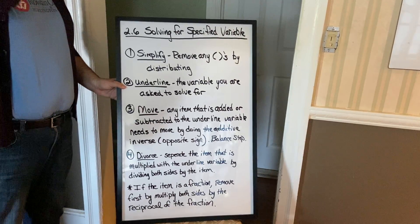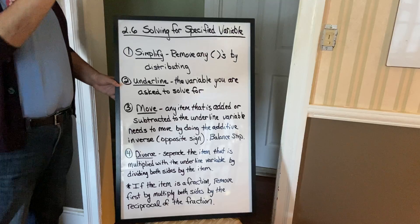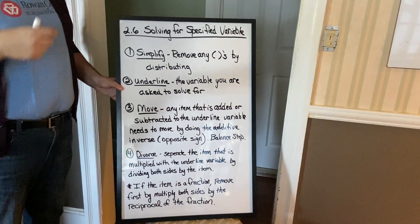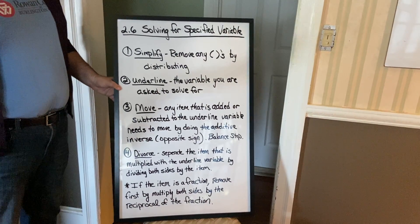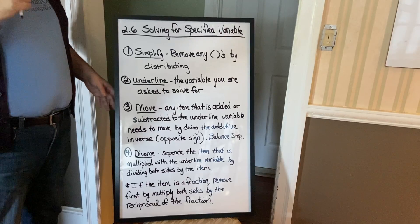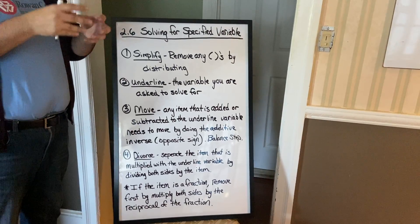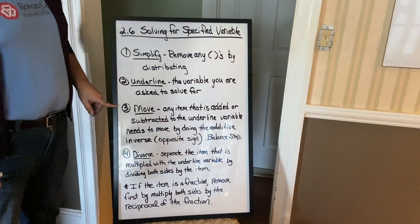The second step is that you're going to underline the variable that you're asked to solve for. So, in every question I give you, they're going to have a variable that they'll say solve for X or solve for D or solve for P. They're going to tell you, whatever they're asking you to solve for, that's the variable.